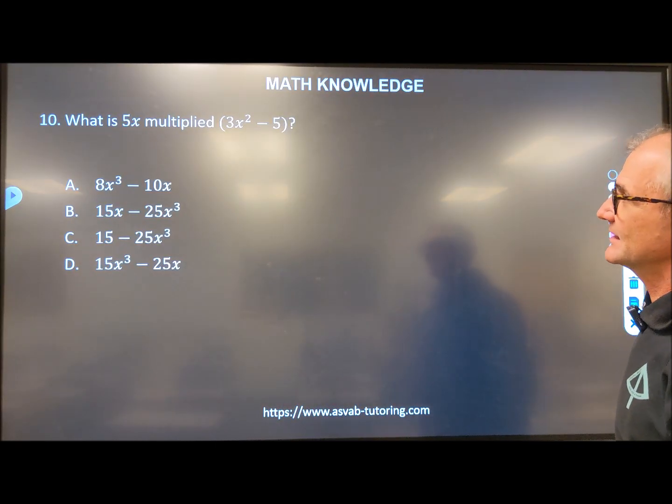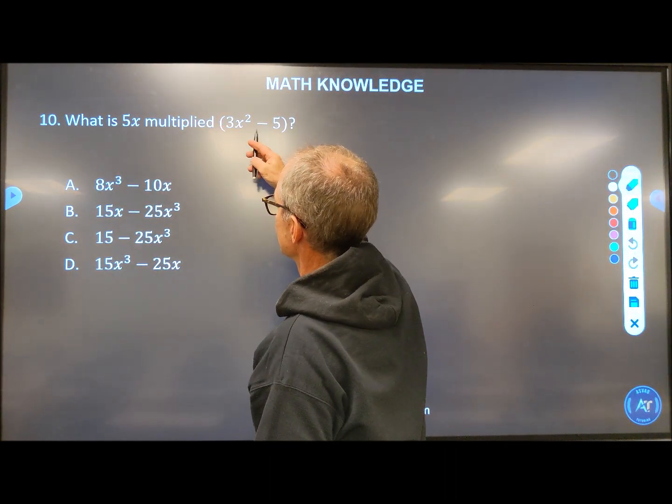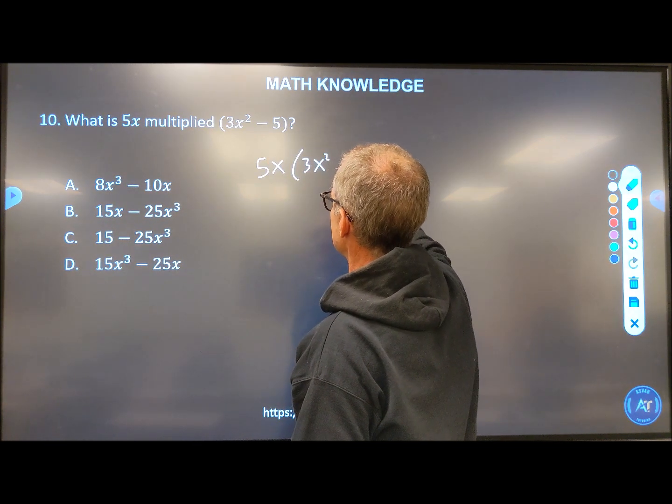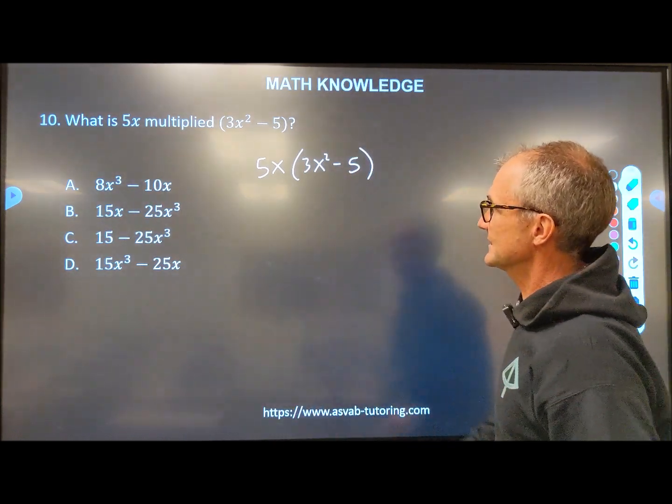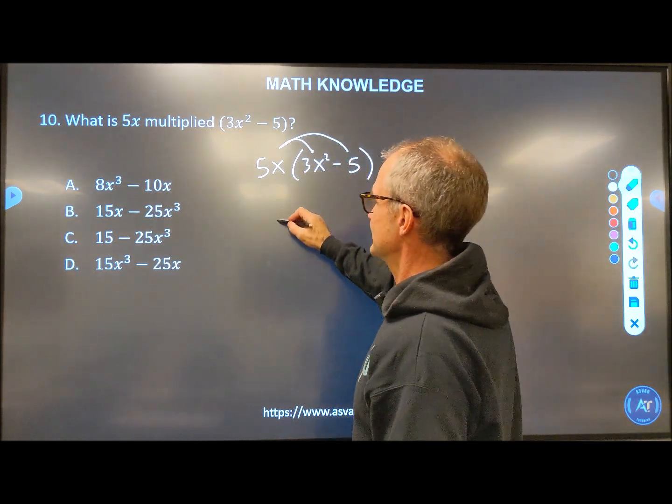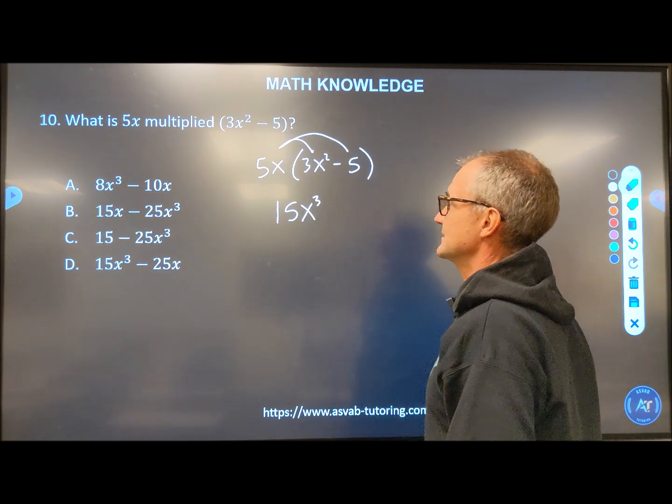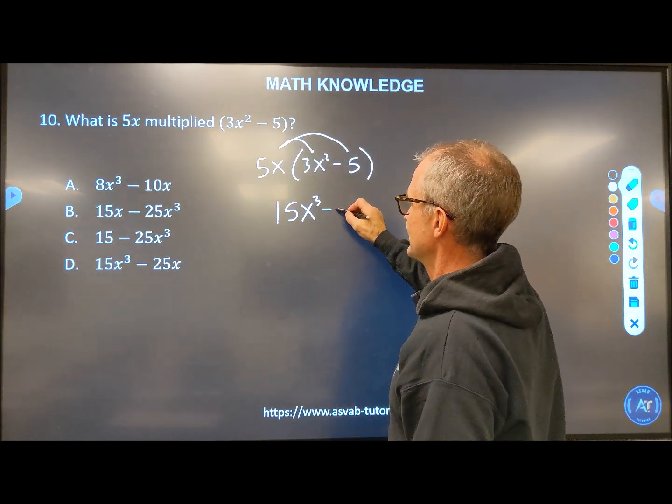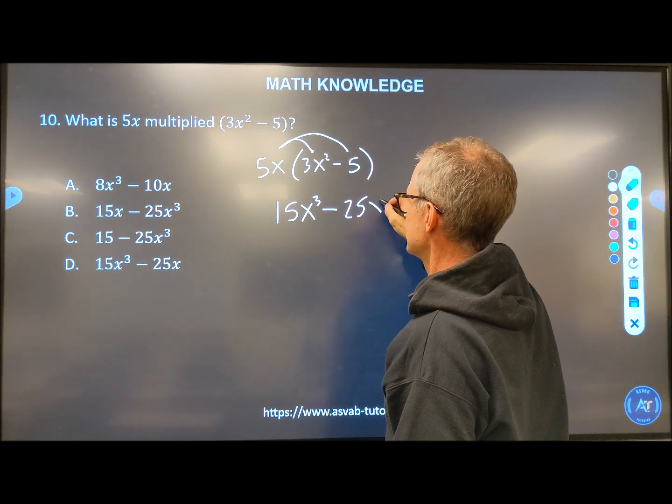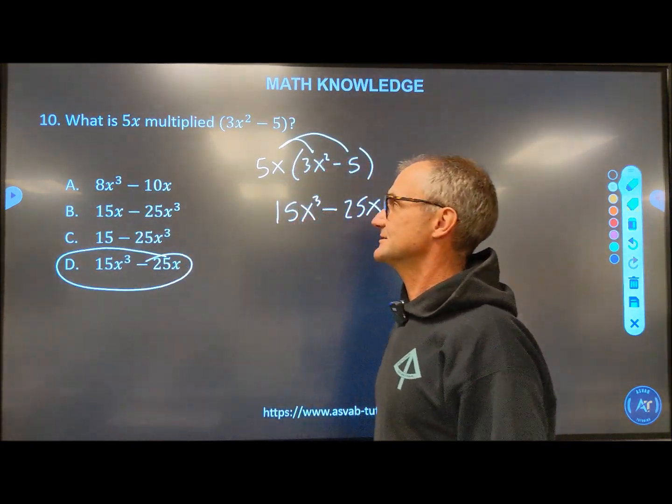Number 10, what is 5X times this? So this is saying just multiply 5X times this. So I have 5X times the quantity 3X squared minus 5. This is like distribution. I've got to distribute this 5X through the whole quantity. So I've got 5X times 3X squared. It's going to give me 15X times X to the second. As I add my exponents, you get a 3. And I distribute through this term. Negative times the positive will be negative times 5X and 5 will be 25X. And then I look over here to see 15X to the third minus 25X. And that's the correct answer for 10.